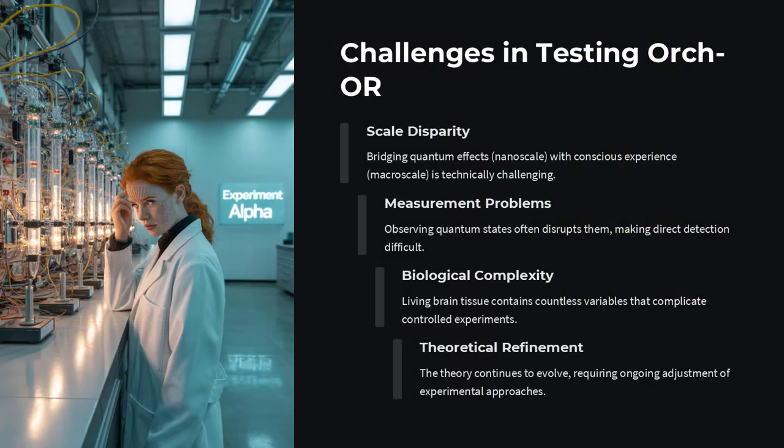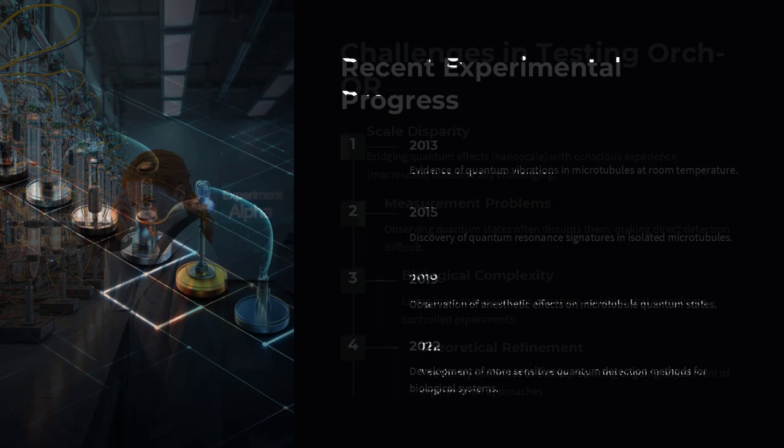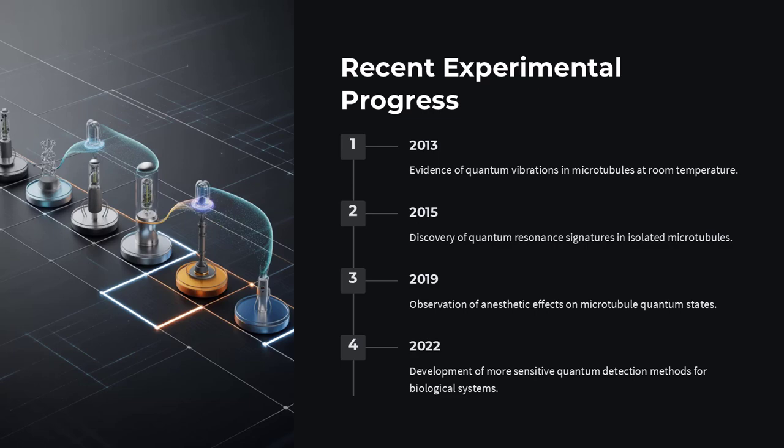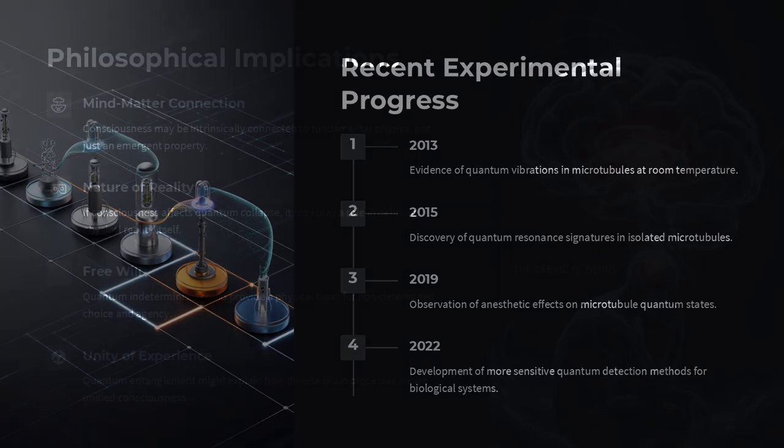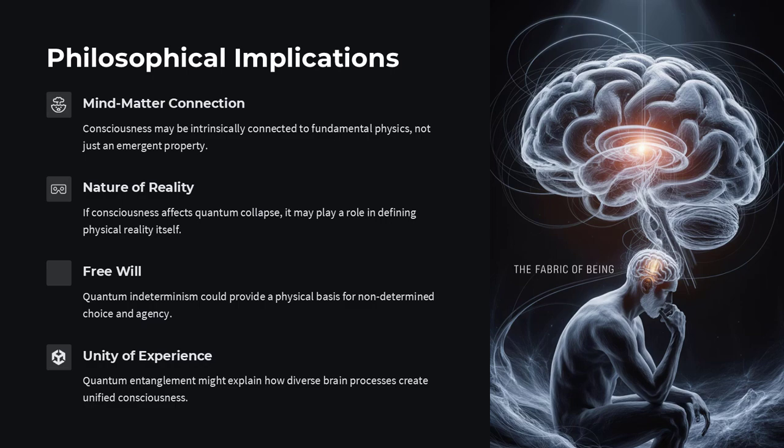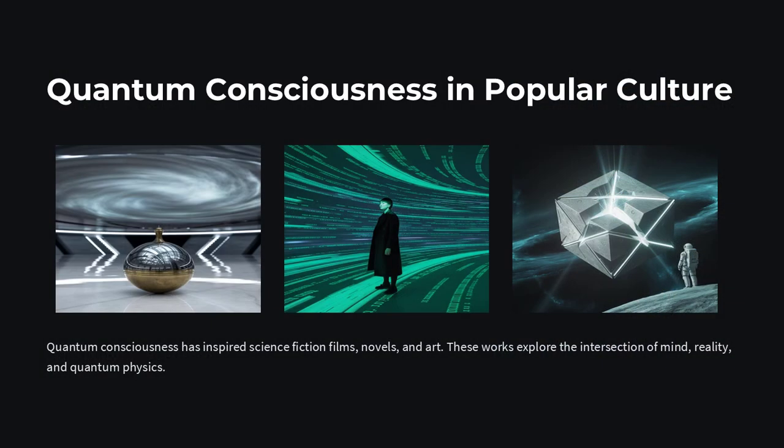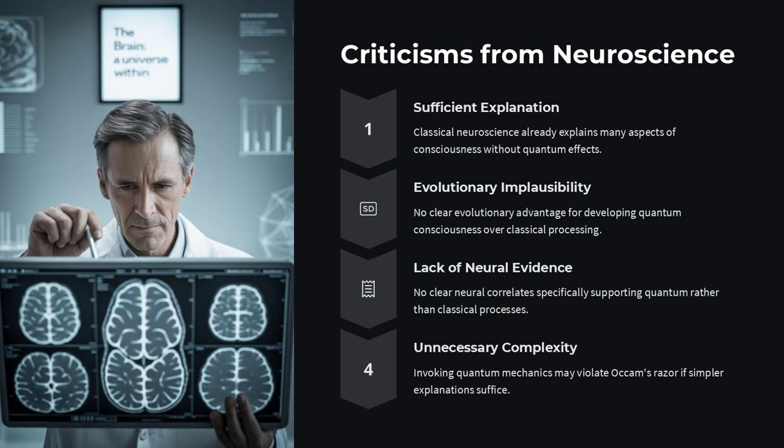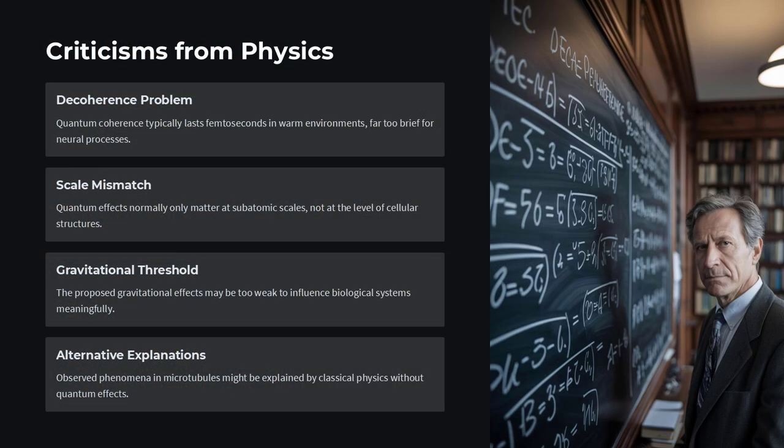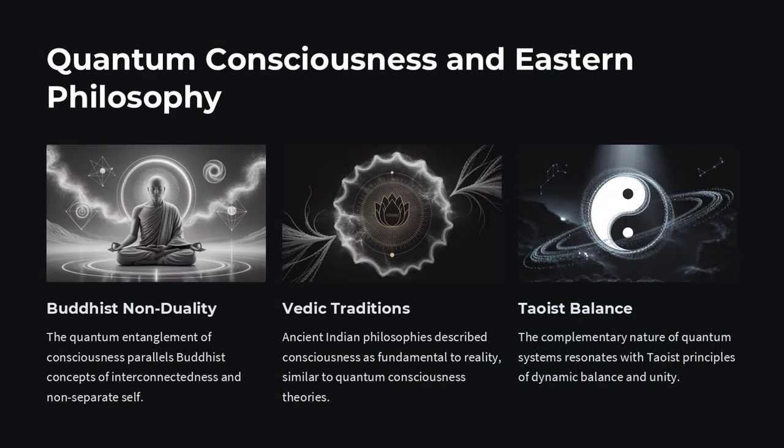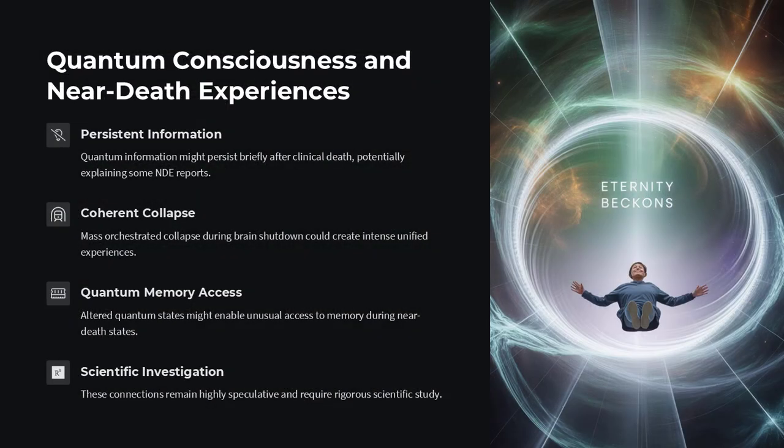Dispute drives fresh lab tests. How can we test Orch-OR in the lab? Researchers are cooling isolated microtubule samples to ultra-low temperatures and probing them with ultra-fast lasers or nuclear magnetic resonance to catch coherent oscillations. Others use engineered neurons lacking microtubule integrity to see if consciousness functions like gamma-wave synchrony alter. If disrupting tubulin quantum states consistently dulls awareness markers, it would be a game-changer.